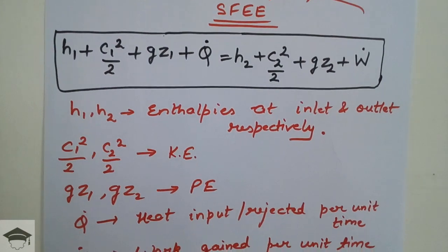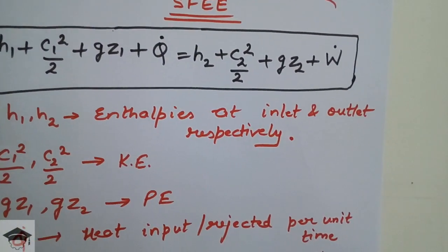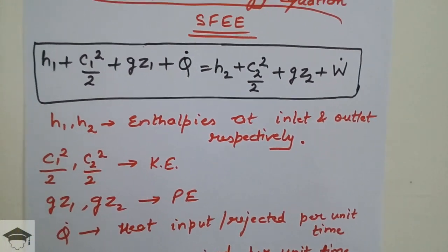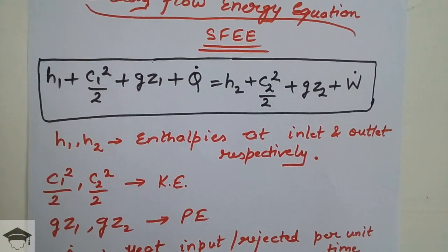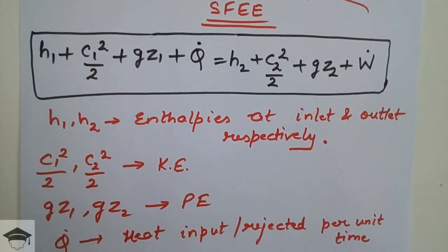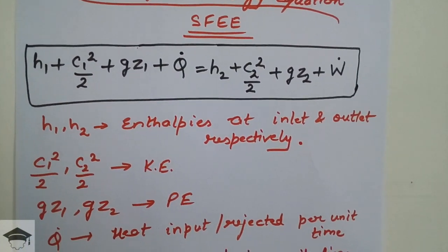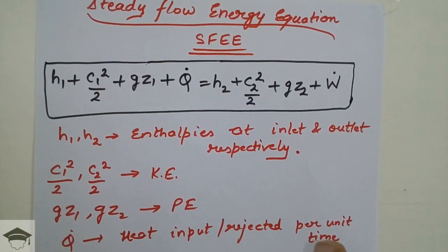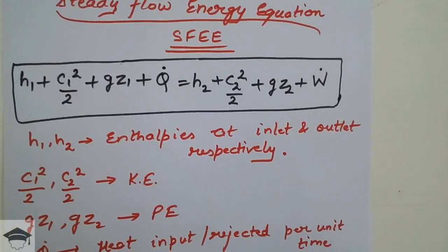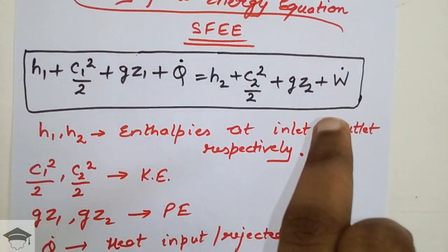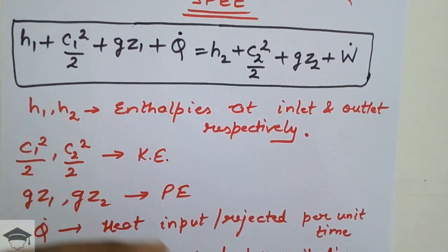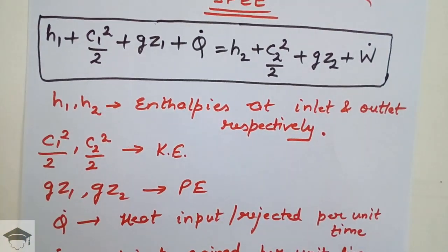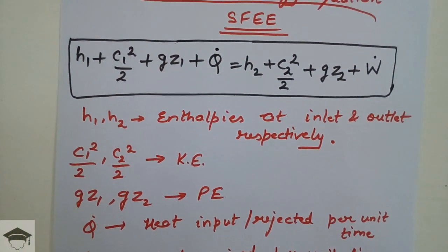This equation applies to any open system where fluid is flowing. If you apply this to a turbine, compressor, or open channel flow, you look at what terms become zero. For example, if the flow is in an open channel, z1 and z2 are at the same datum level so they cancel out, as there is no significant height difference.